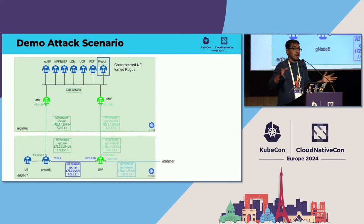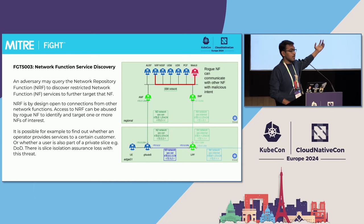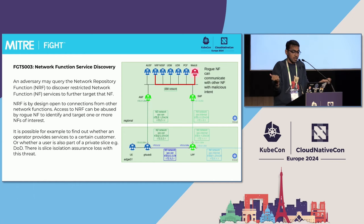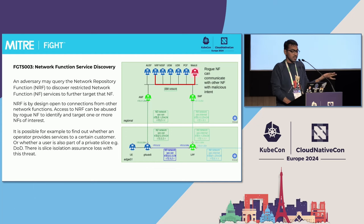The demo attack scenario is: we imagine that WebUI is compromised and turned rogue. What can it do? It can interact with a fellow network function called the Network Repository Function, which can provide all the endpoint details of the rest of the network functions available. You don't want that happening, because now it can not only fetch that information but also know what to exploit next and start moving around. So how do you prevent this?